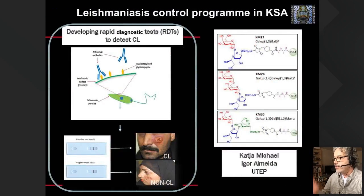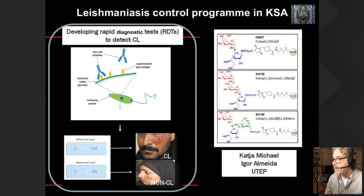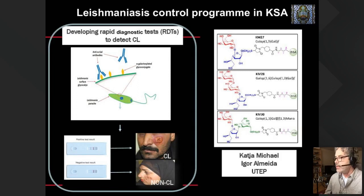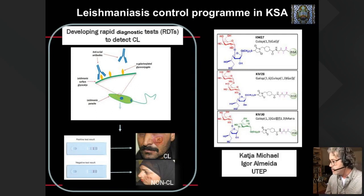We collaborated with Professor Kate Michael and Professor Igor Almeida from the University of Texas at El Paso, who are experts in glycochemistry. They synthesized some of the epitopes we are validating using ELISA tests, with plans to develop rapid diagnostic tests.